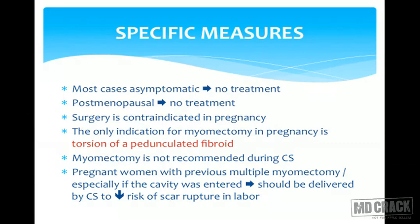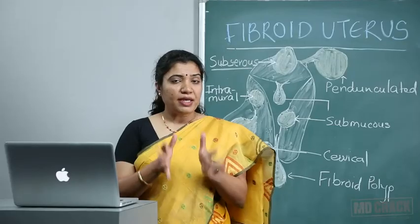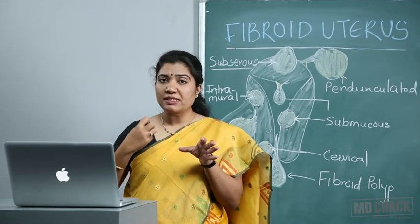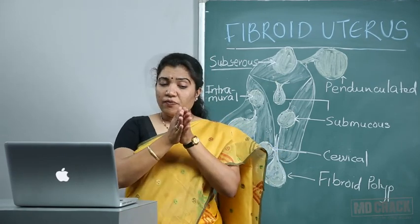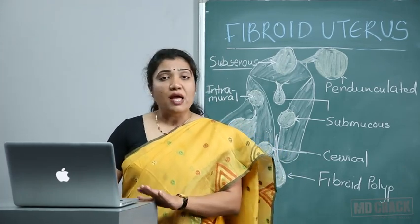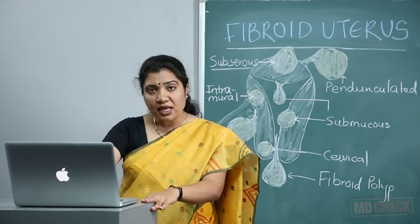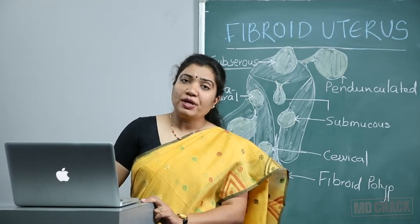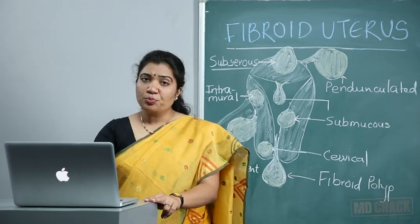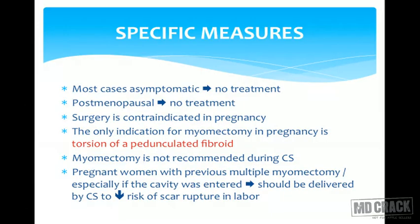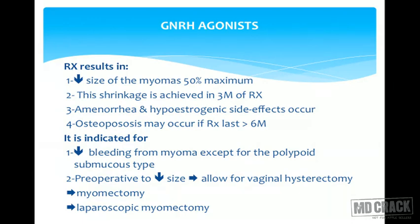Pregnant women with previous multiple myomectomies — especially where the uterine cavity was opened — need special care. When removing a myoma, we incise the uterine wall, shell out the myoma from its false capsule, and reconstruct the uterus. If the cavity was opened during this process, that myomectomy scar has a risk of rupture during labor. So if the patient has had multiple myomectomies with the cavity opened, we must plan an elective cesarean section at term. The myomectomy scar is considered a weak scar.